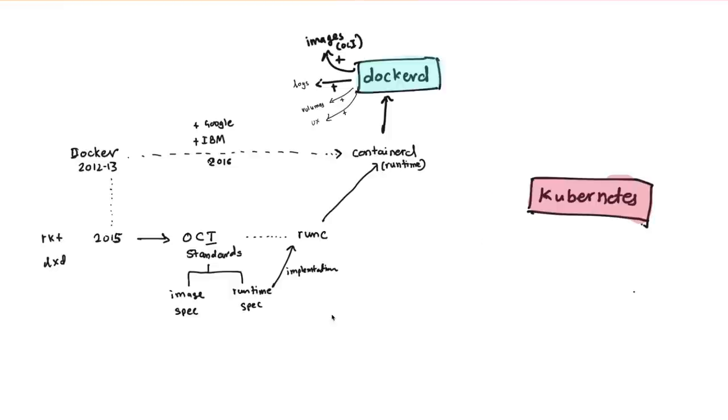Initially it worked with Docker, but then Rocket came in and submitted a pull request to add support. Kubernetes's team from Google didn't like that way, and they decided to create something called CRI—Container Runtime Interface. They created a language that would allow them to interface with any runtime that understands CRI.